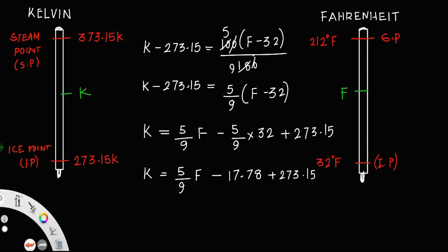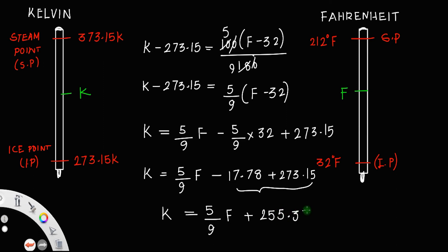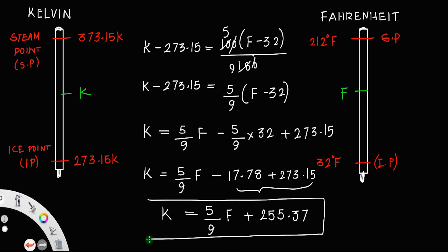This simplifies to 273.15 minus 17.78 equals 255.37. So K equals 5/9 F plus 255.37. That is the relationship between Kelvin and Fahrenheit.